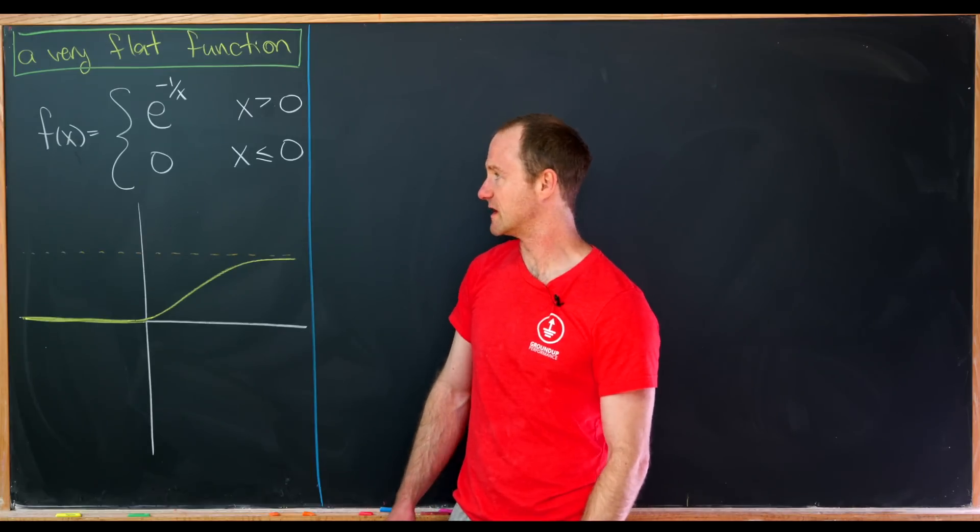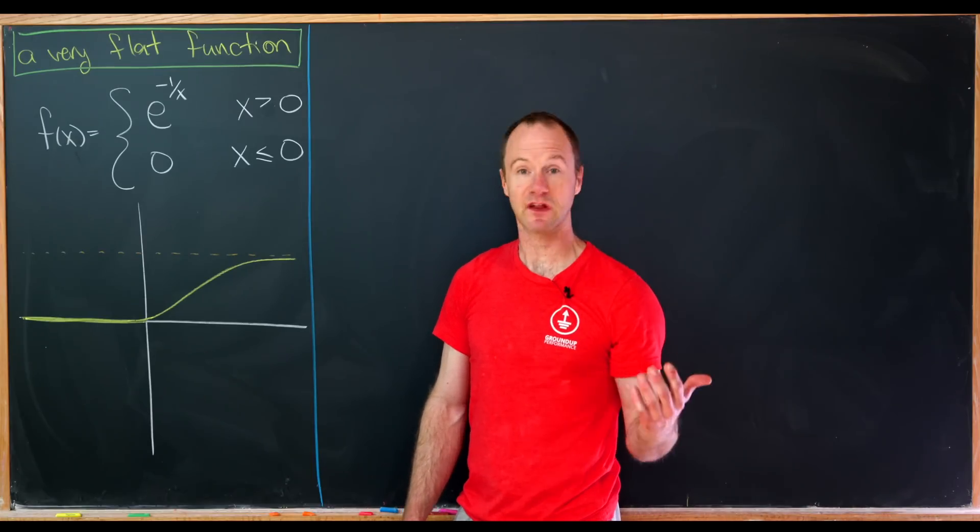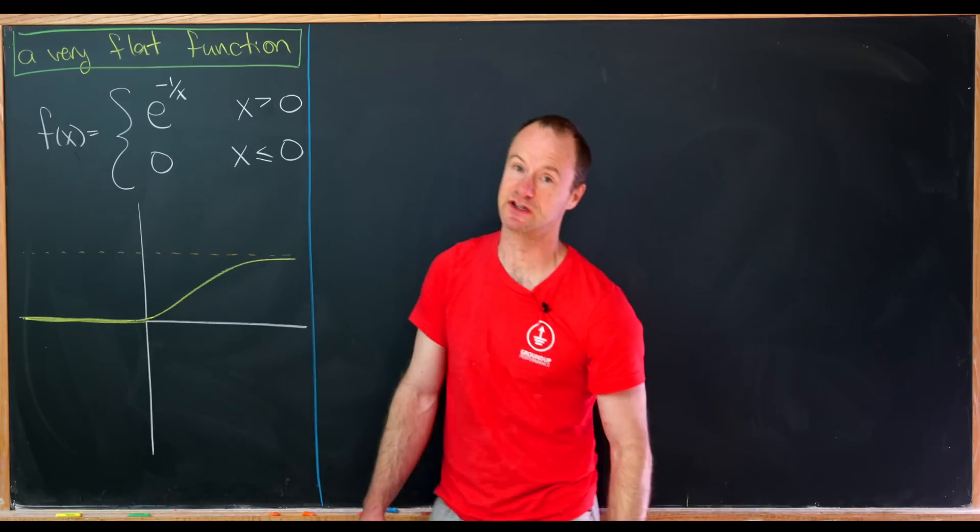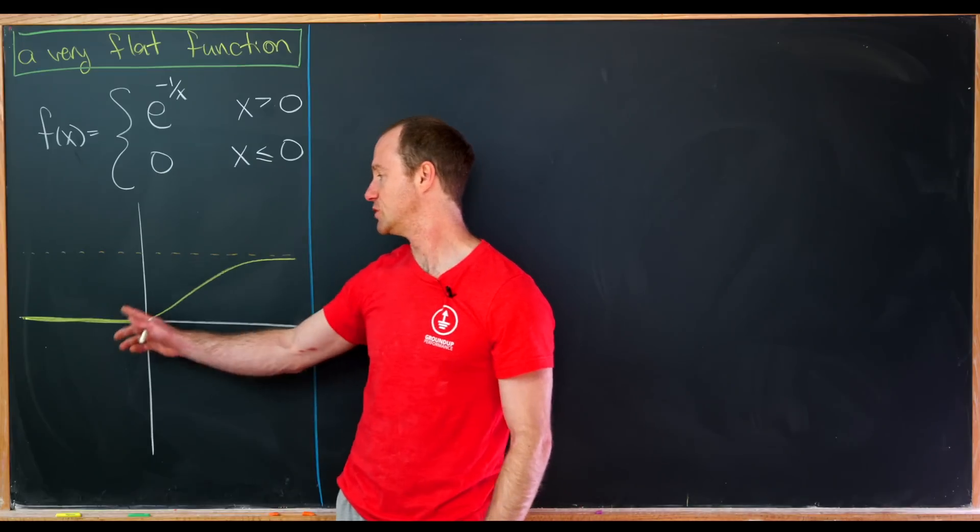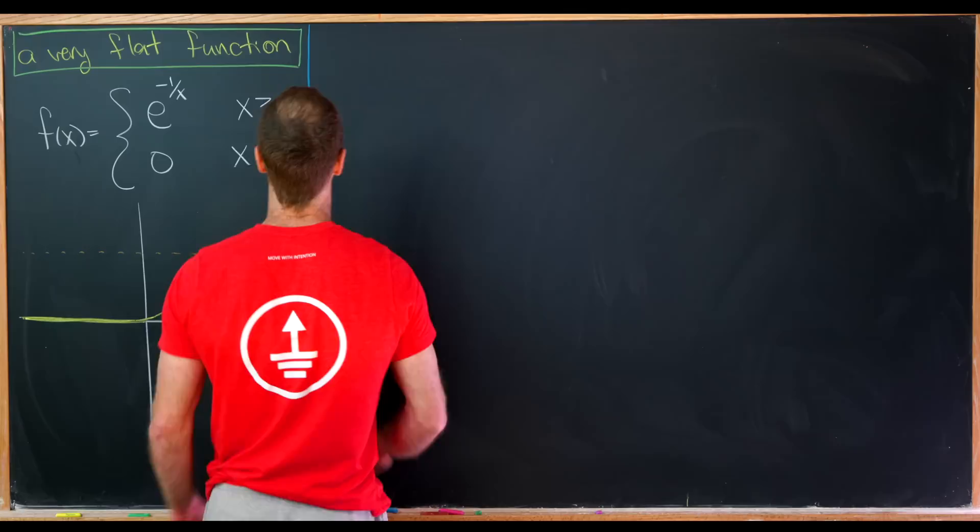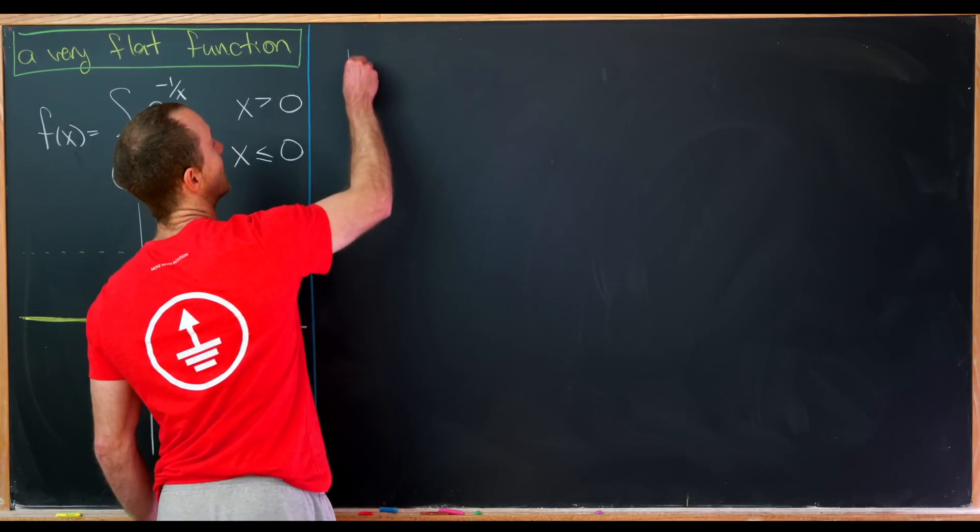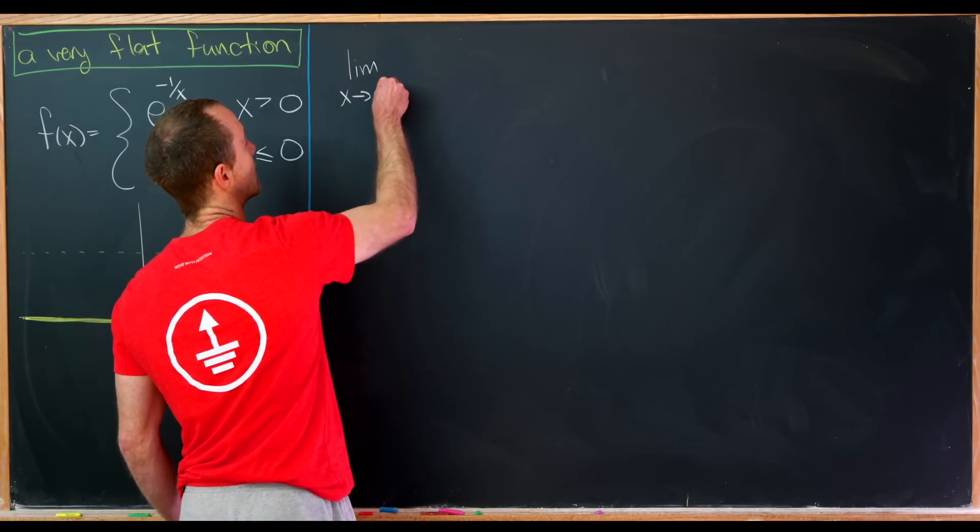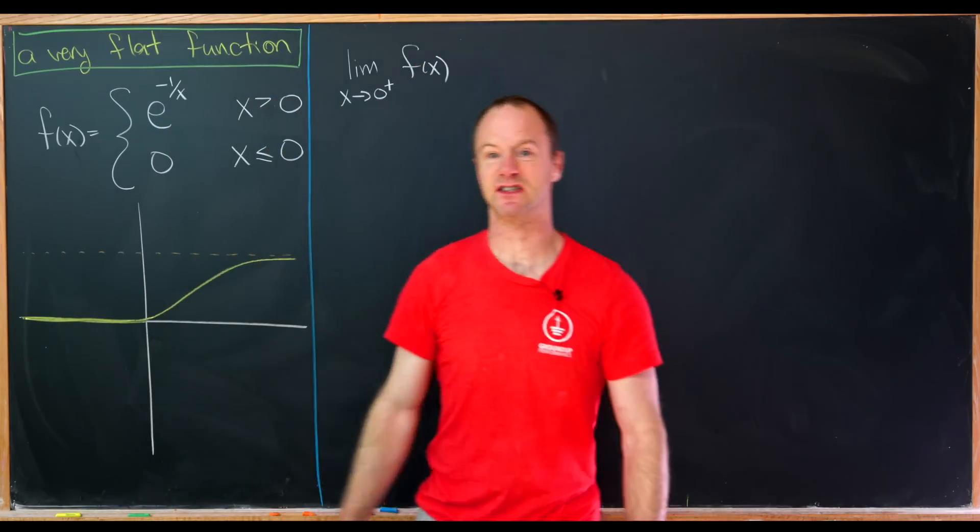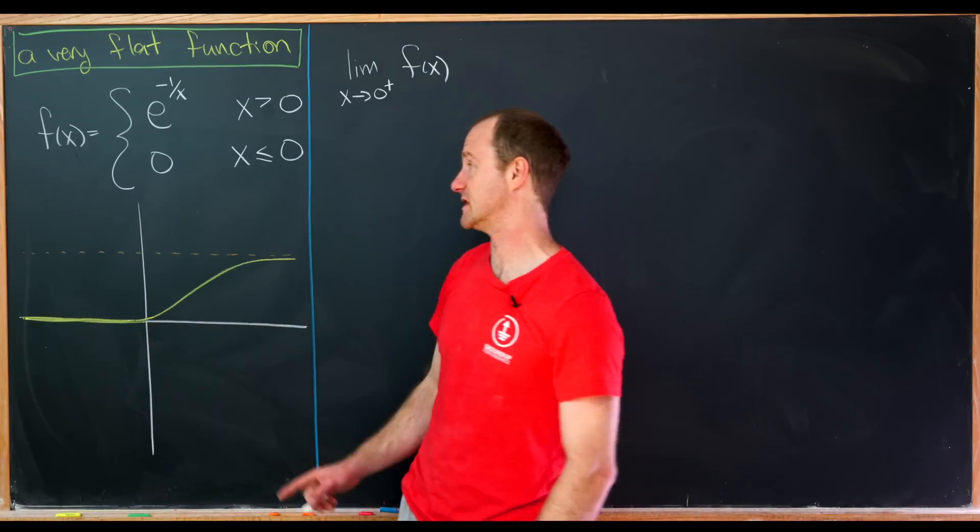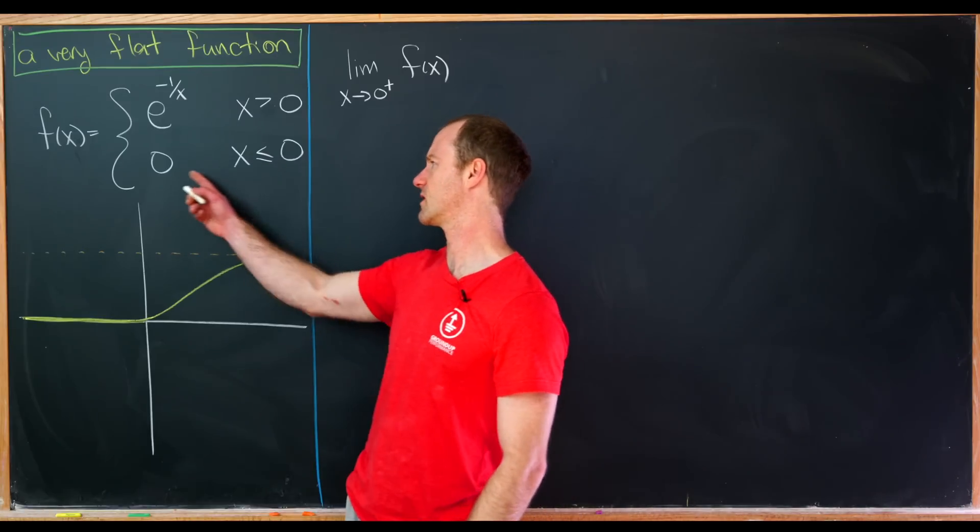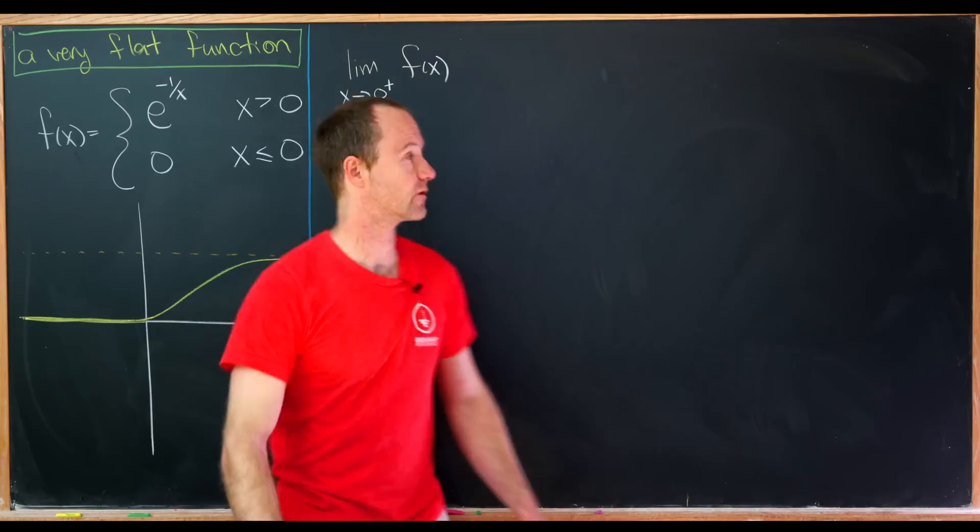Let's first show that this thing is continuous. And notice we only really need to show that it's continuous at one point, and that's at the origin when x is equal to zero. That's because it's made up of two functions which are clearly continuous away from zero. So in order to show it's continuous, we need to look at the limit as x goes to zero from the right of f of x, and hopefully that will be equal to zero, which is the value of the function at zero, but also the limit as x goes to zero from the left of f of x. But that's pretty clear because we have a constant function over here.